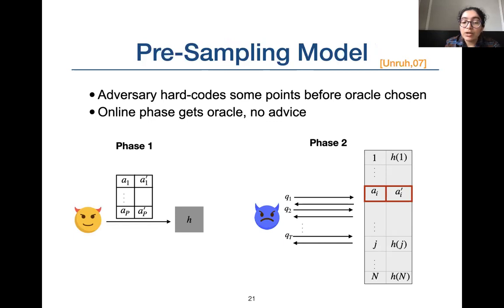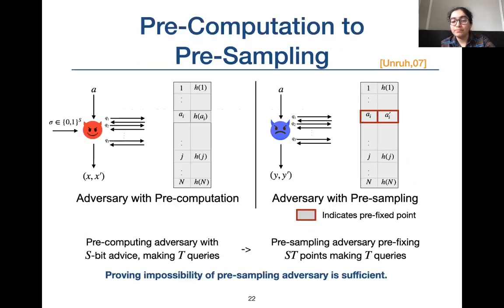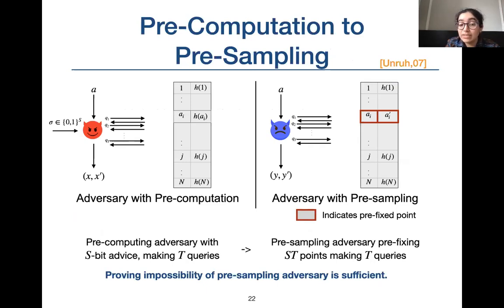Let's look at the method Coretti et al. used for upper-bounding advantage for finding unbounded-length collisions. They used a pre-sampling technique given by UNRUH. In the pre-sampling phase, the adversary sends a list of mappings between at most p input and output points to the oracle. In the online phase, the oracle returns outputs from the mapping for listed points and function h for other points. Coretti et al. improved a result by UNRUH giving a relation between the advantage of pre-computing and pre-sampling adversaries.